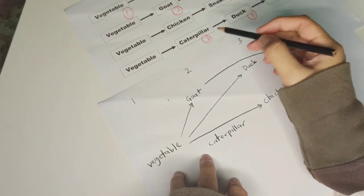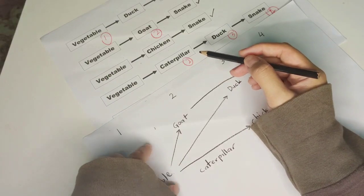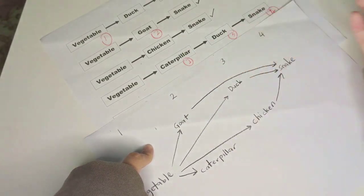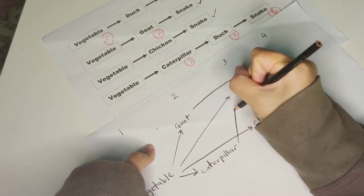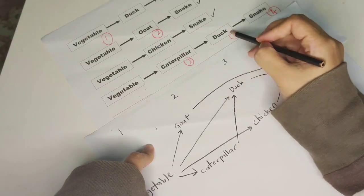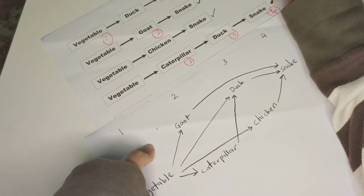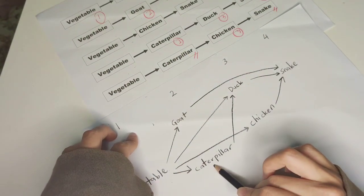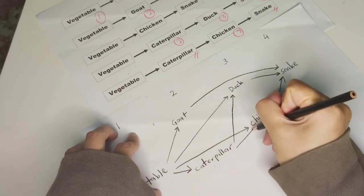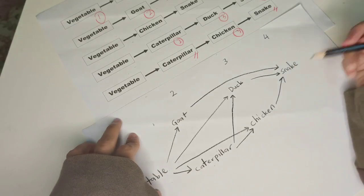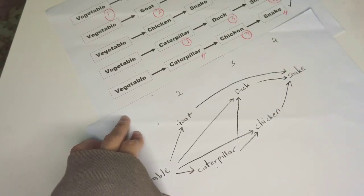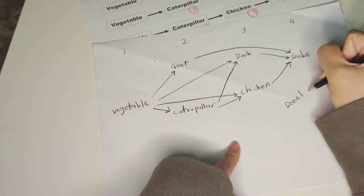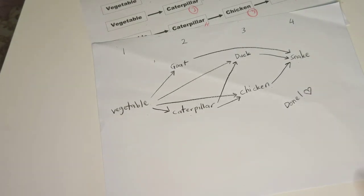The fourth food chain: vegetables eaten by caterpillar. Draw an arrow. Caterpillar eaten by duck — draw up to where duck is. Then duck eaten by snake — there is already an arrow, so no need to draw another one. Vegetable eaten by caterpillar — arrow already there. Then caterpillar eaten by chicken, and chicken eaten by snake — arrows already drawn, so no need to draw another one. Done with the food web — easy, right?